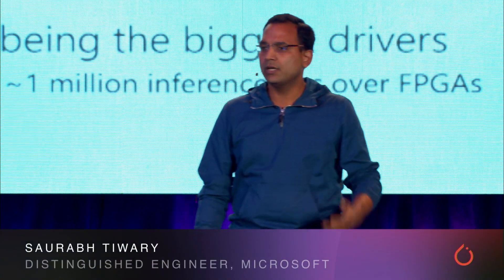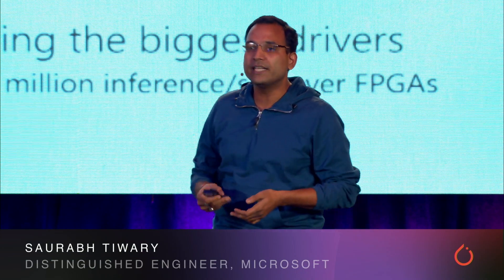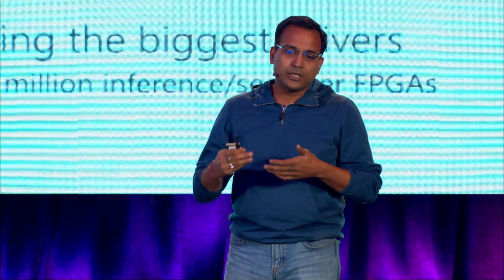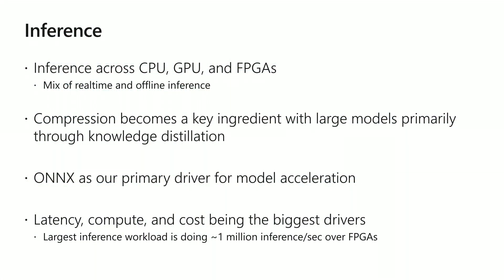In terms of inference, we use almost everything we have — CPUs, GPUs, and FPGAs — across a mix of real-time as well as offline inference, mostly real-time given the nature of our business. Because models are becoming larger, like the 1.2 billion parameter model, we cannot afford to run inference at that scale, so model compression becomes a very key ingredient. We are mostly using knowledge distillation, though there are other approaches we are actively looking into. ONNX is becoming our primary driver for model acceleration — once the model is trained, we go through the ONNX runtime with compression, which leads to very efficient numbers across CPUs, GPUs, and FPGAs.